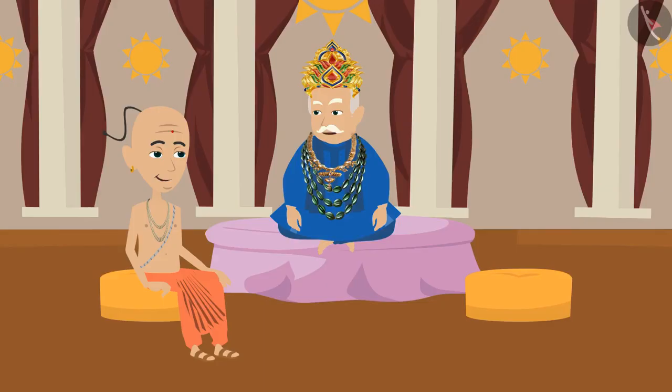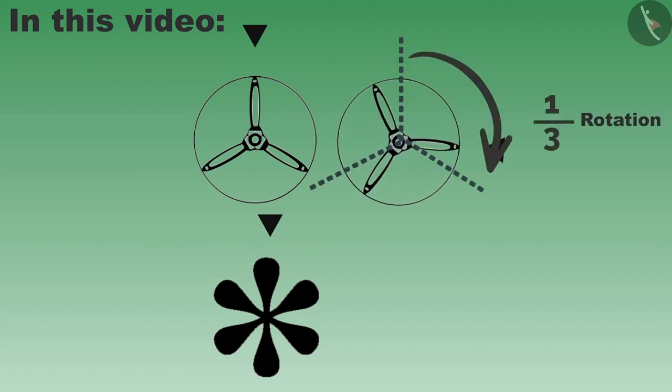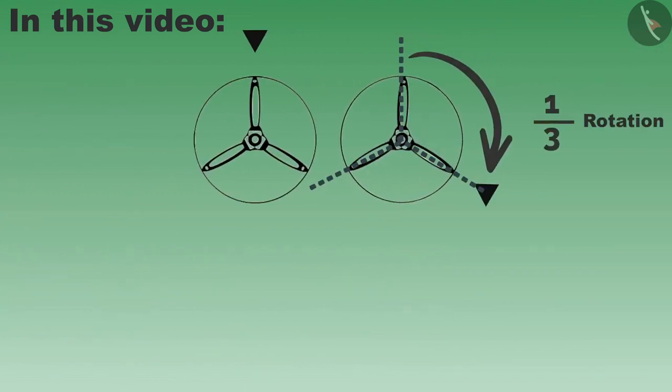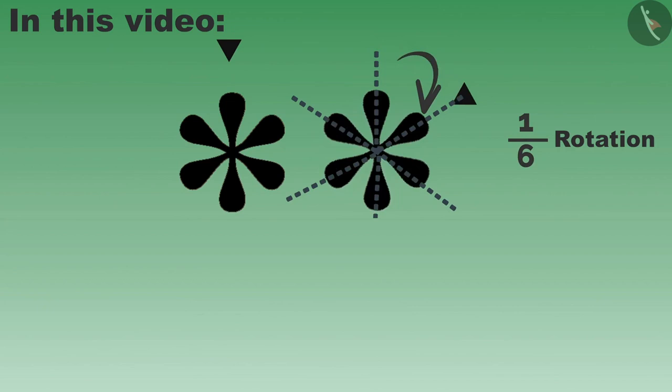So in this video we have learned about some objects and their shapes which do not change after one-third and one-sixth rotation. The shapes and things which look the same even after one-third rotation represent one by three rotational symmetry, and the shapes which look the same even after one-sixth rotation represent one by six rotational symmetry.